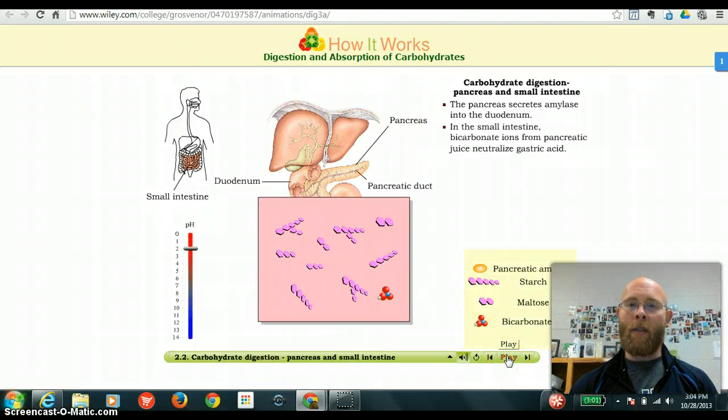So now we're getting into the role of the pancreas. The pancreas starts getting involved in that first section of the small intestine called the duodenum. You can see the pancreas lies right here, and there's a duct that dumps right into the duodenum, and those pancreatic juices will also contain more amylase, pancreatic amylase. And then, now we're going to get into this bicarbonate thing.